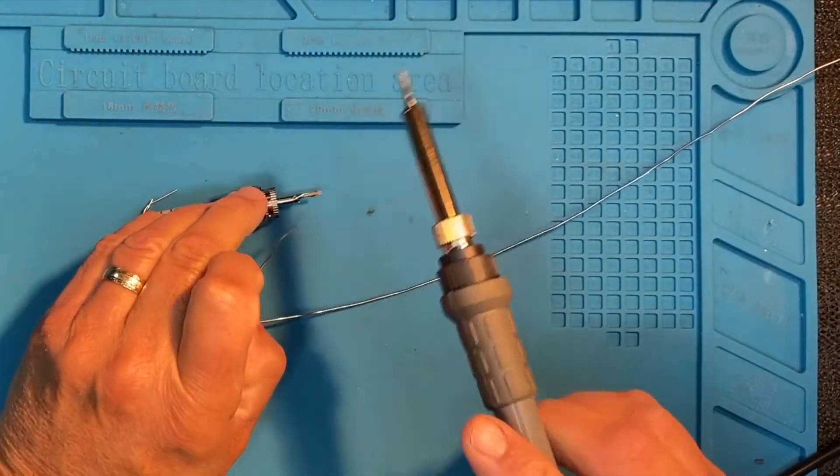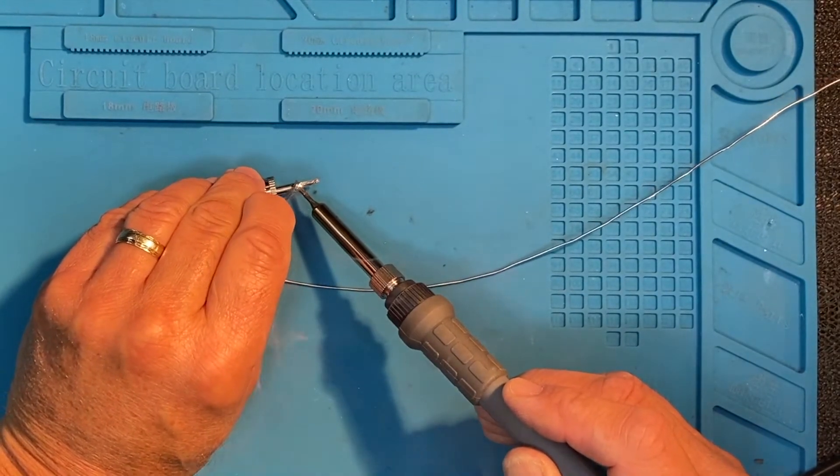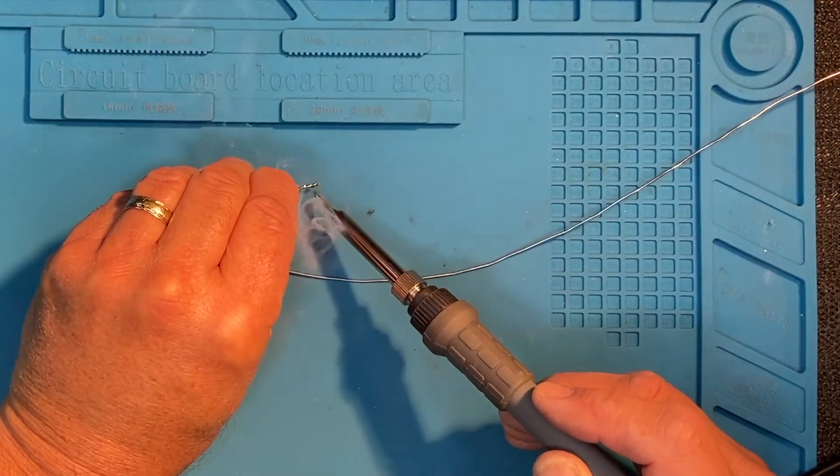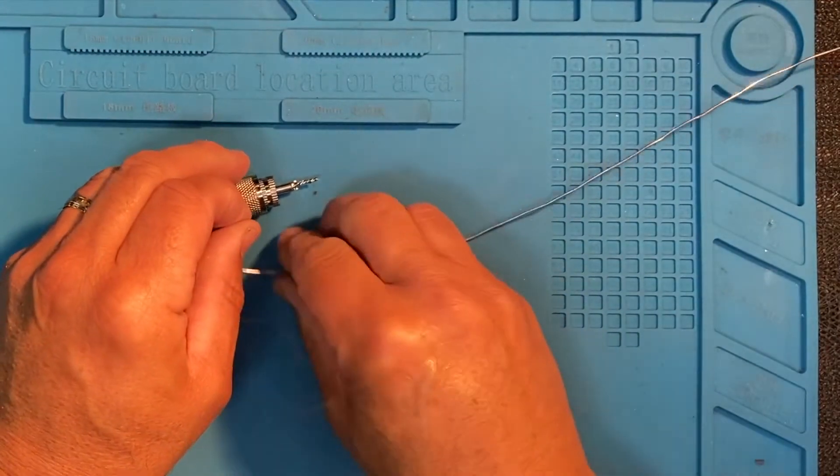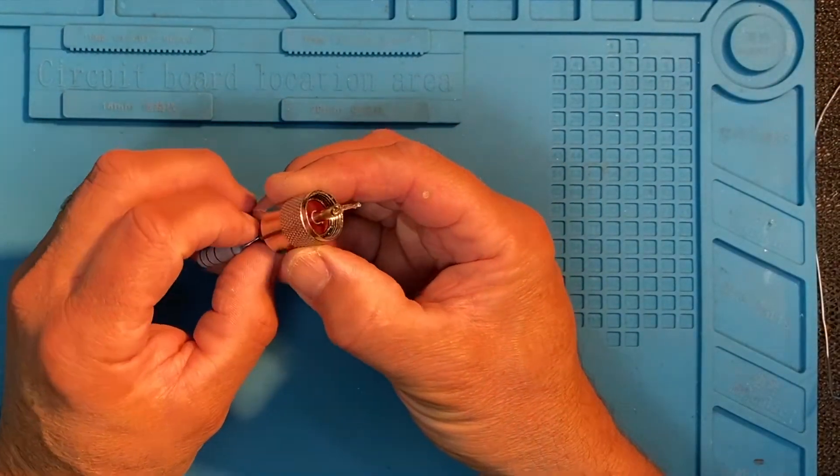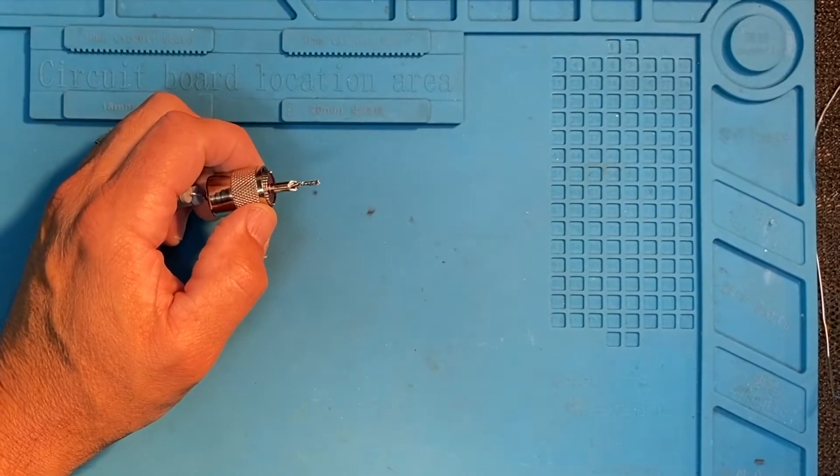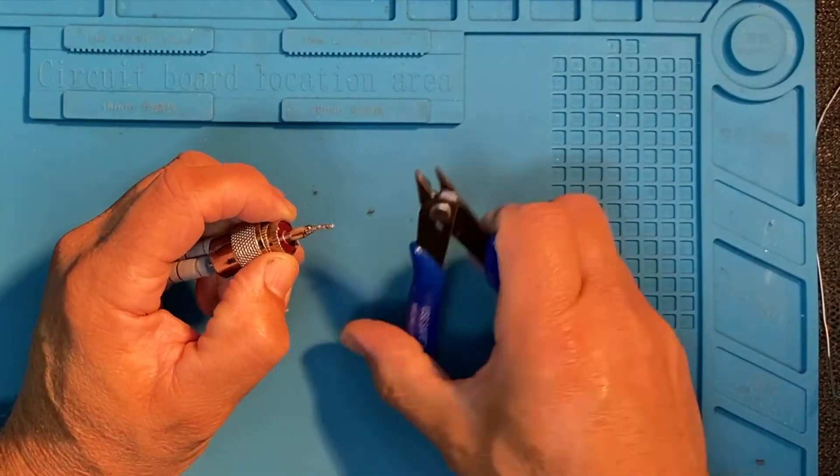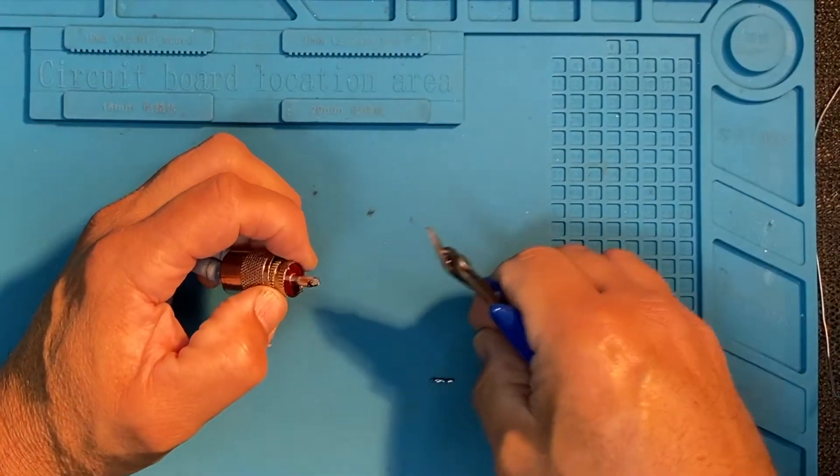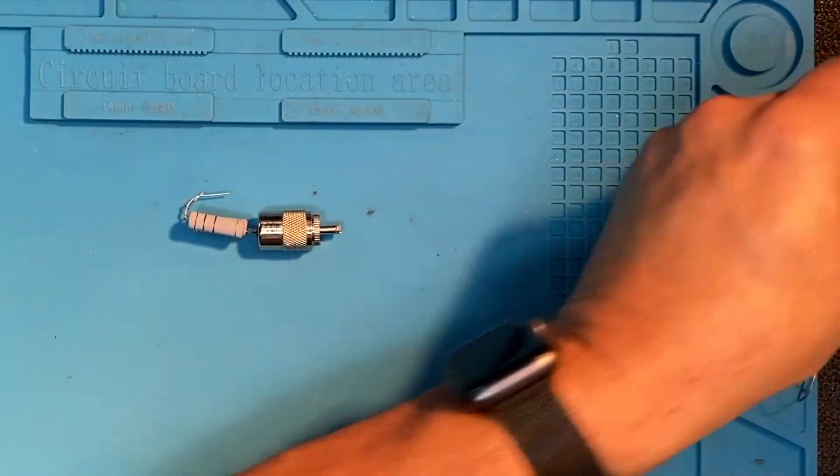I find it helps, especially with these PL259s, to get the wire to solder a lot better. Just going to snip the end off and put a bit more solder on the end.